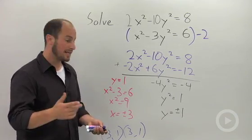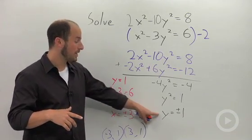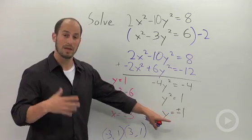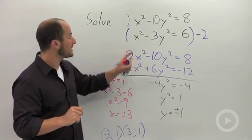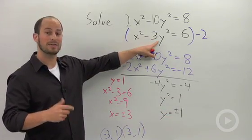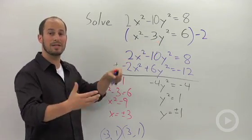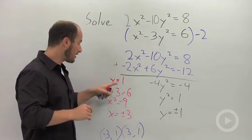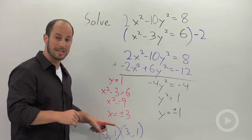The other thing we have to consider is the other possible solution which was y equals negative 1. But if y is negative 1 we're still squaring it so we're going to get the exact same value numerically. So our x's are going to come out to be the same thing either plus or minus 3.